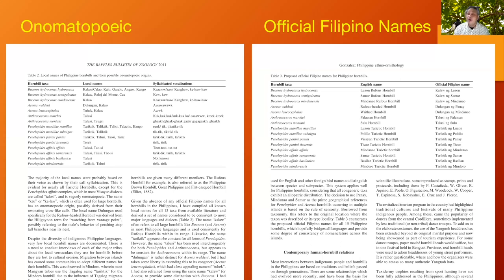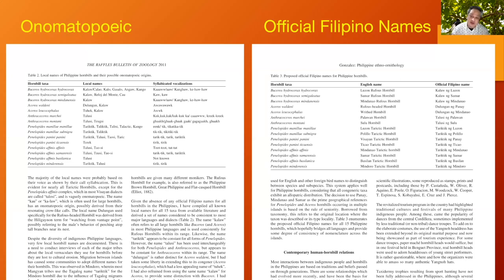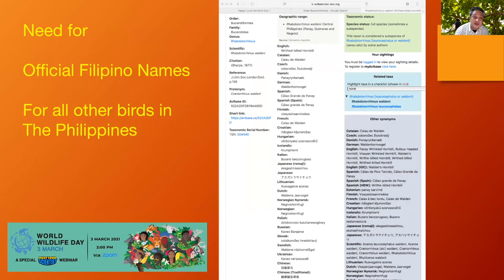What we need is an official Filipino name — one that binds us as a country together. Here is my suggestion for the official Filipino names of all the different species of Kalaw: Kalaw ng Luzon, Kalaw ng Samar, Kalaw ng Mindanao, Dulungan ng Panay, Dulungan ng Mindanao, Talusi ng Palawan, and so on. It's a suggestion to make things consistent in Filipino. And this is just an example for hornbills — what we need now is an official name for all the different birds in the Philippines.